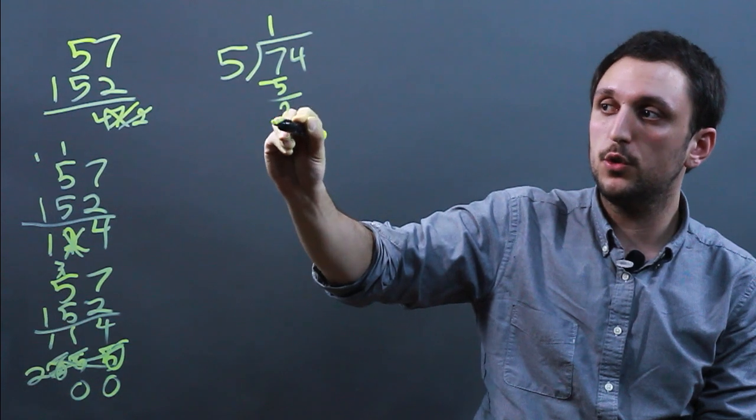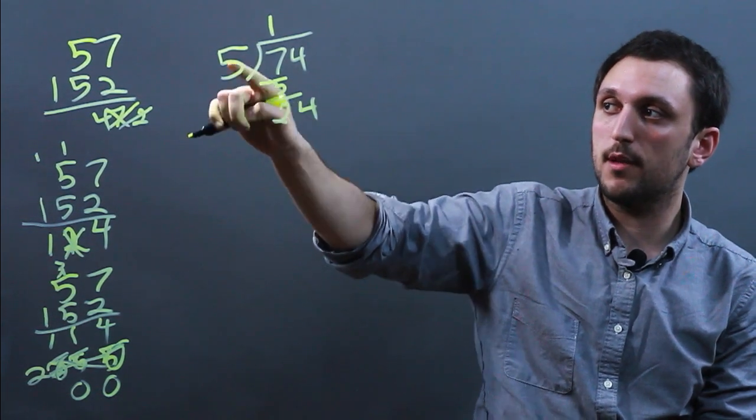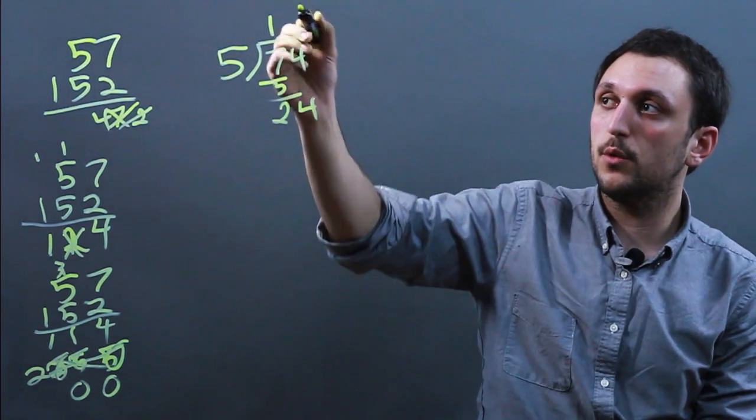So 7 minus 5 is 2. We drop down the 4 and we say 5 into 24. So 5 goes into 24 four times.